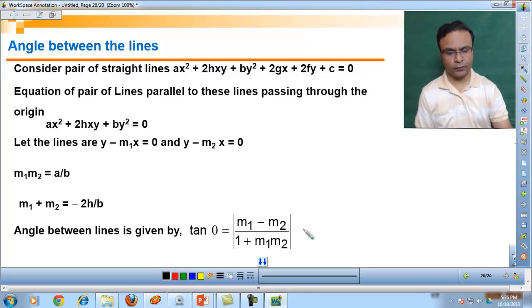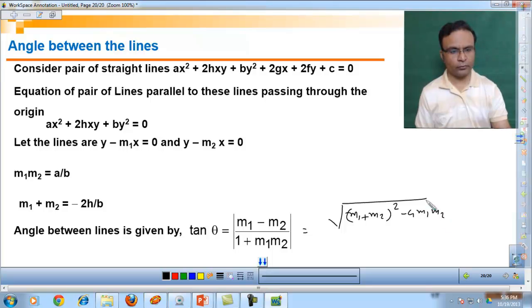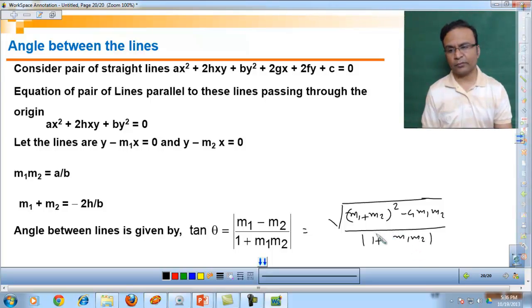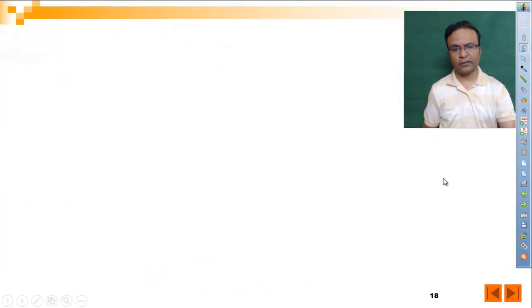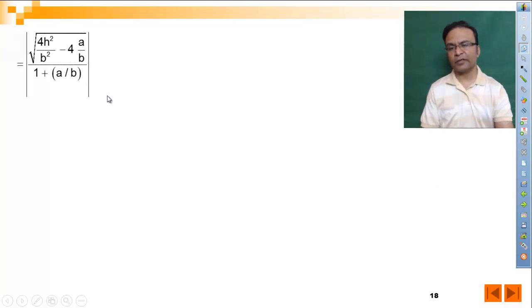This equals square root of m1 plus m2 square minus 4m1m2 divided by 1 plus m1m2. Now here we can put the values of m1 plus m2 and m1m2. After putting these values, we will get tan theta equals square root of 4h square minus b square minus 4 times a upon b, upon 1 plus a upon b.